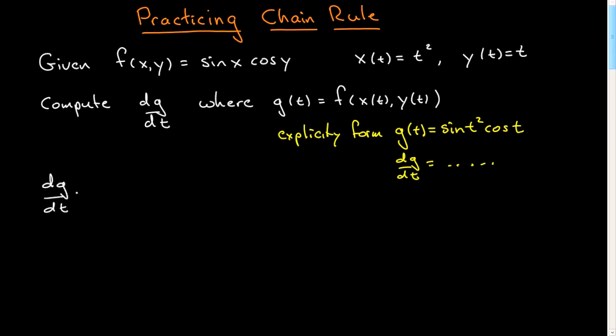dg dt is given by, we take the partial derivative of f with respect to its first argument, which would be x. And then we differentiate x with respect to its argument, which is t. And we go to the next, differentiate f with respect to its second argument, which is y. And then differentiate y with respect to t. And in this case, there are no further arguments, and so we're finished.